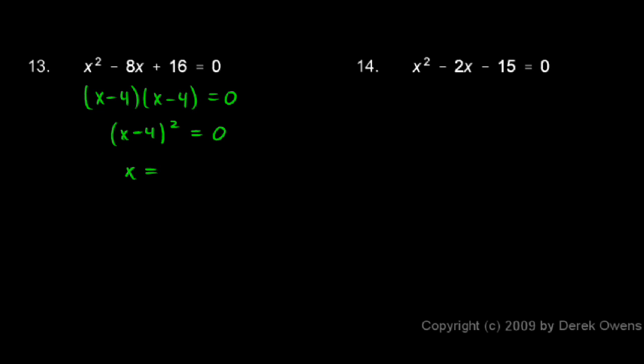So the answer is x equals 4, and there's only one answer in this case. Negative 4 is not an answer. Negative 4 plugged in right there would give you negative 4 minus 4, which would be negative 8 squared, which would not be 0.